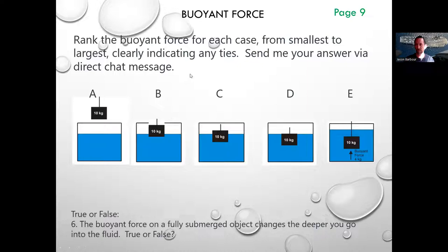Rank the buoyant force for each case from smallest to largest, clearly indicating any ties. So buoyant force is smallest on this one because the object is not yet submerged in the water.